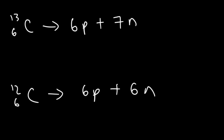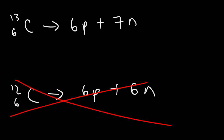Carbon-12 does not have an odd number of protons, nor does it have an odd number of neutrons, so carbon-12 does not have a property called spin. Therefore, its nuclei cannot be used in NMR spectroscopy. Carbon-13 has an odd number of neutrons, so you can use carbon-13 in NMR spectroscopy.